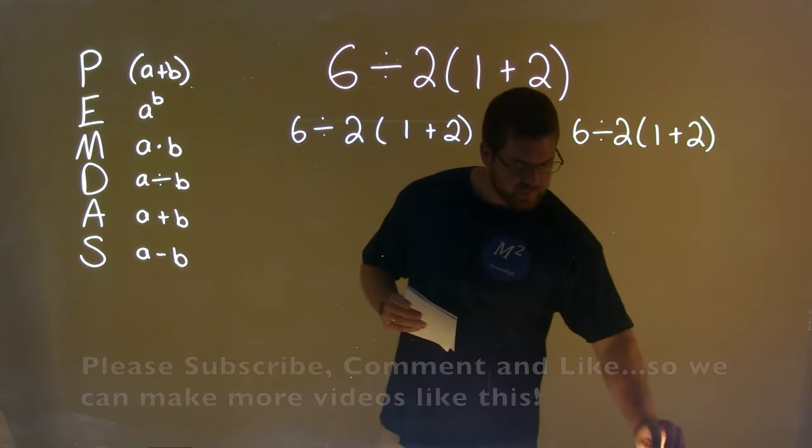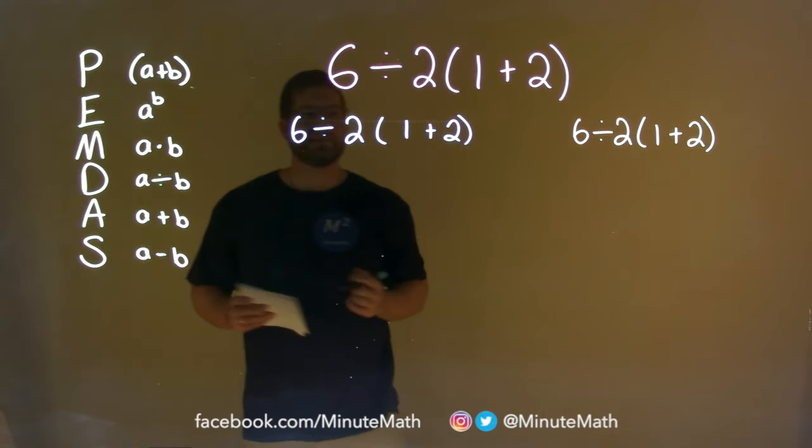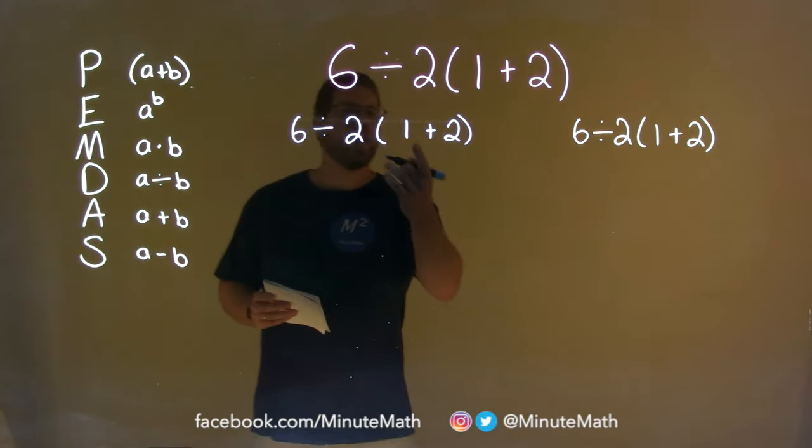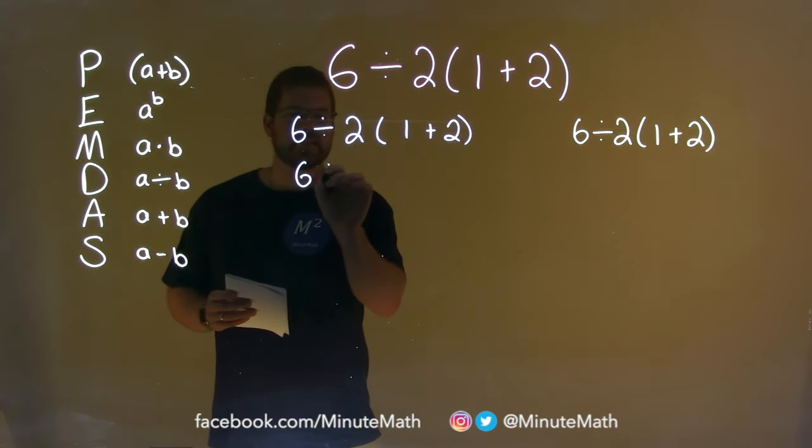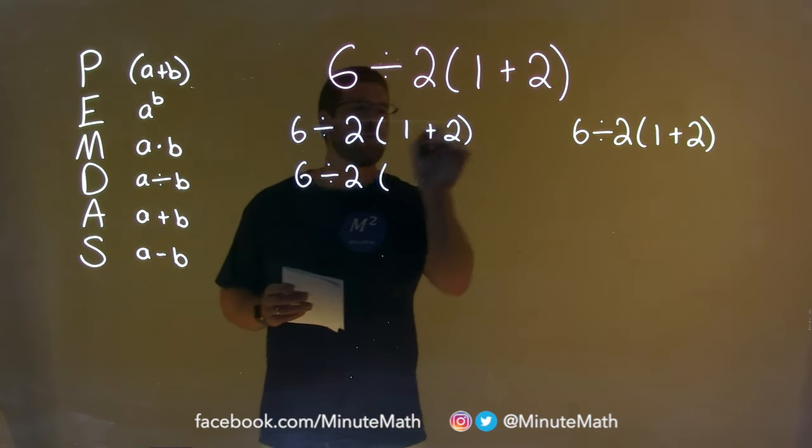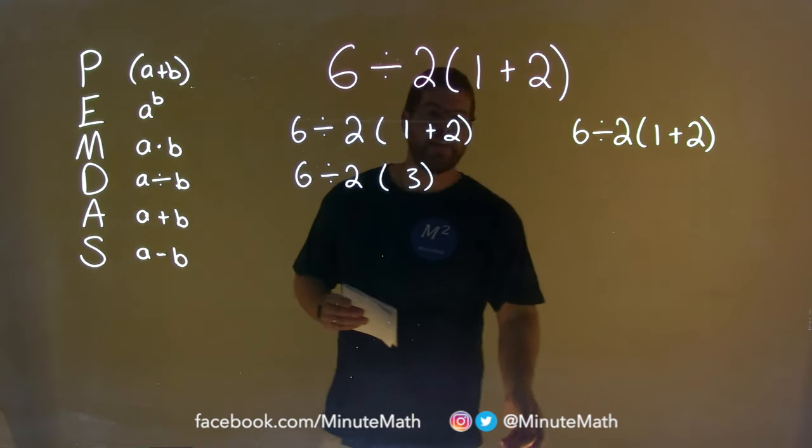Okay, so the first step here, we all can agree that parentheses needs to come first. We need to add the one and the two together. So, six divided by two, and one plus two is three.